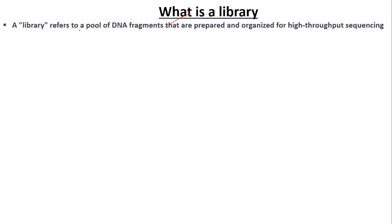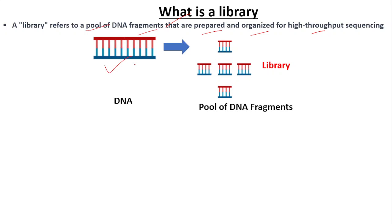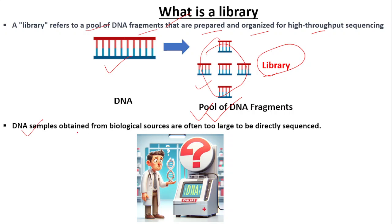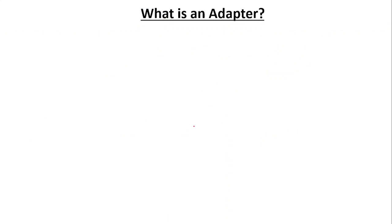A sequencing library refers to a pool of DNA fragments that are prepared and organized for high-throughput sequencing. Let's say we have DNA that is fragmented, and we get a pool of DNA fragments — that pool is called the sequencing library. Why do we need to fragment the DNA? Because DNA samples obtained from biological sources are too large to be directly sequenced by the sequencing machine. Therefore, the DNA samples need to be fragmented so that the sequencing machine can sequence those DNA fragments.